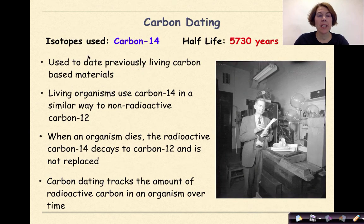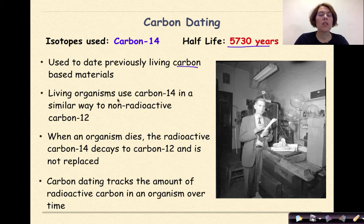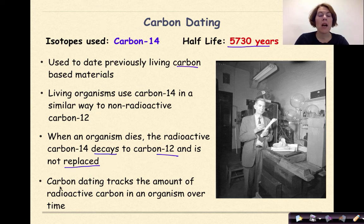Carbon dating. The isotope used in carbon dating is radioactive carbon-14, and its half-life is 5,730 years. It's used to date previously living carbon-based materials. Living organisms use carbon-14 in a similar way to non-radioactive carbon-12. When an organism dies, the radioactive carbon-14 decays to carbon-12 and is not replaced. Carbon dating tracks the amount of radioactive carbon in an organism over time.